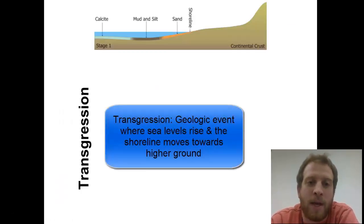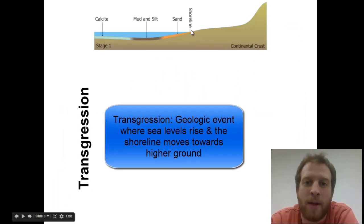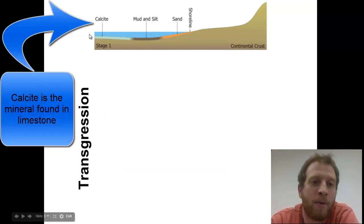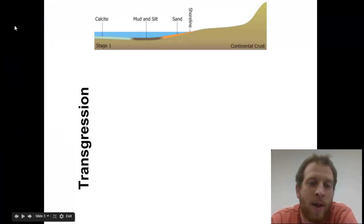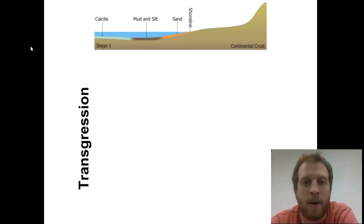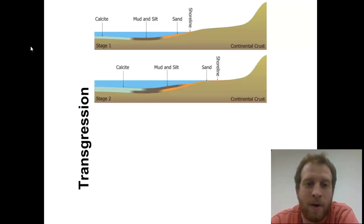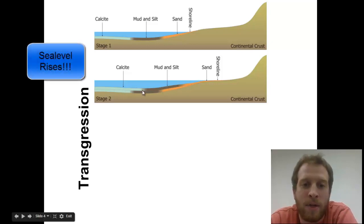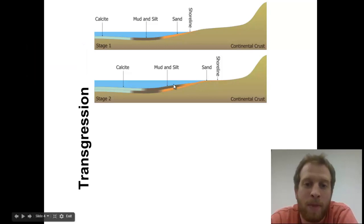Let's take a look at transgression. At stage one, we have a shoreline right here, and as we move further out, we see sand, mud and silt, and then calcite — which is just the mineral present in limestone. For our transgression, what we have is an increase in sea level. So when we increase the sea level, we get the sand, the mud and the silt, and the calcite starting to shift towards the right, because we have deeper oceans — sand moves further up, mud and silt moving to the right, and calcite moving even further inland.